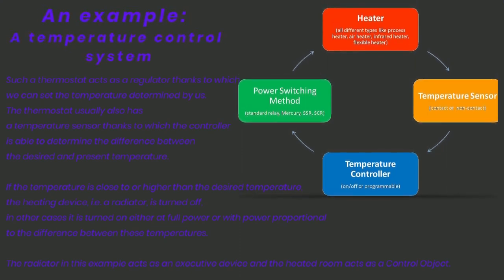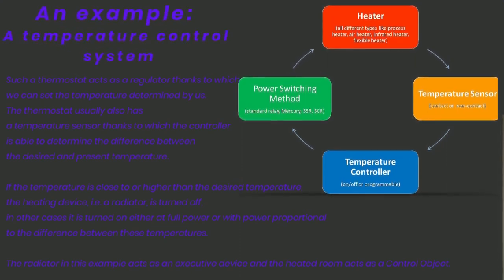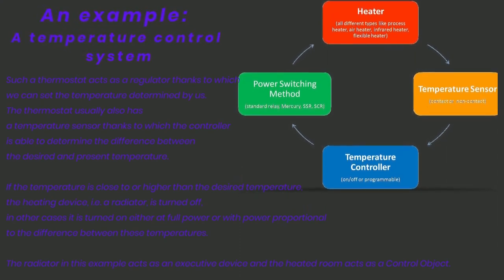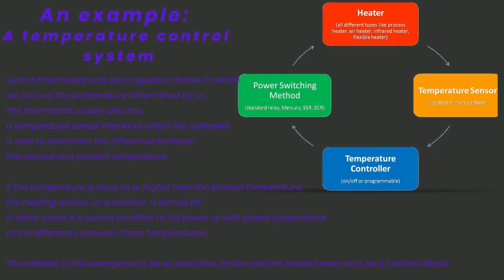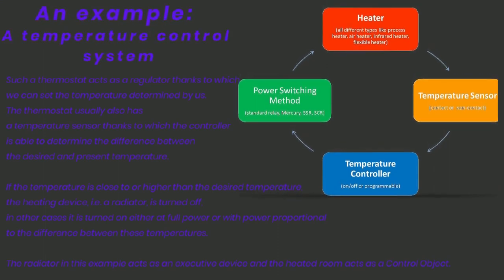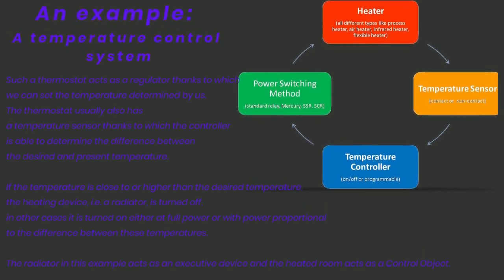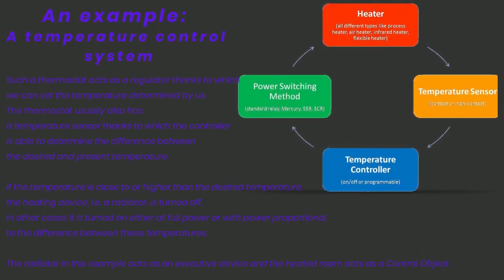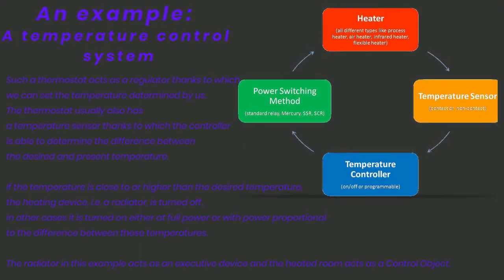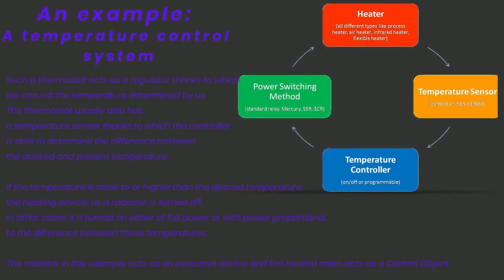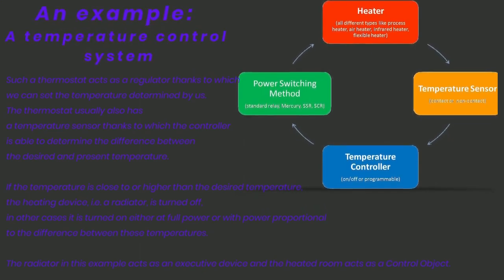If the temperature is close to or higher than the desired temperature, the radiator or another heating device is turned off. In other cases, it is turned on — either at full power or with power proportional to the difference between these temperatures. The radiator in this example acts as an executive device.